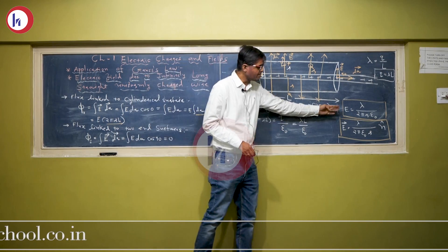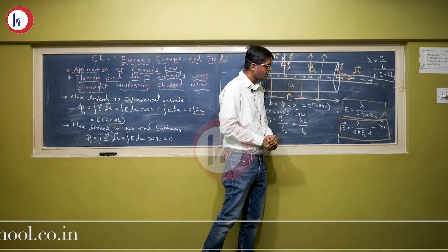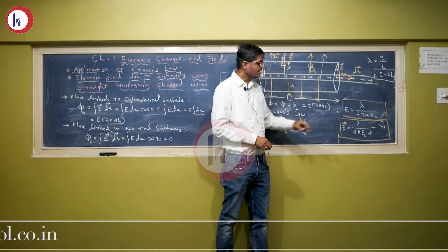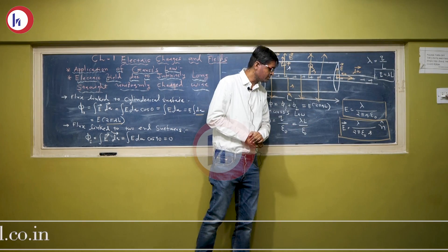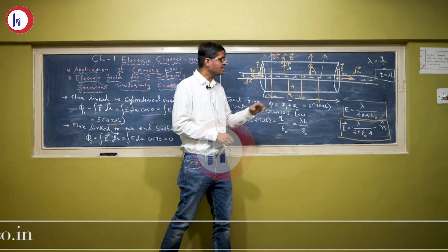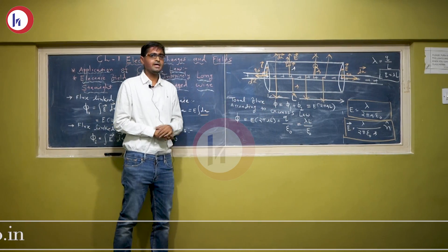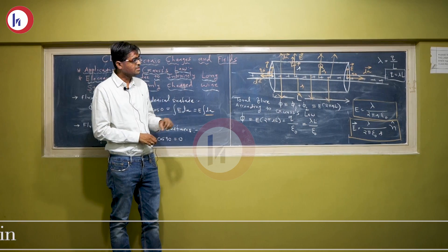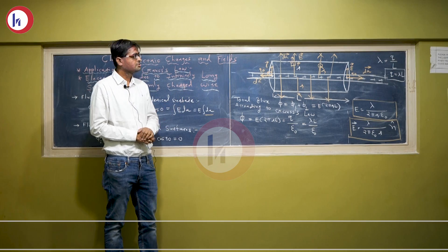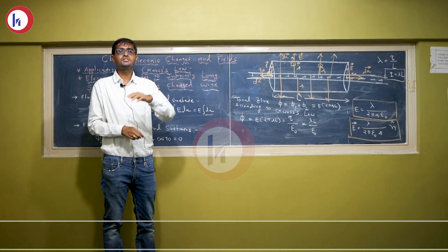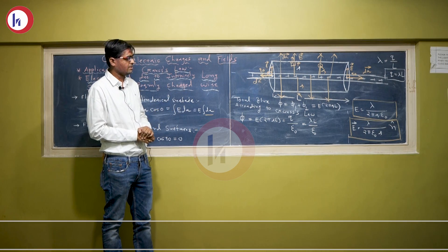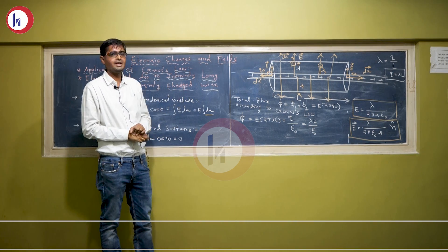The electric field is given by E = λ / (2πε₀r). In vector form, the electric field vector is E⃗ = λ / (2πε₀r) × n̂, where n̂ is the unit vector in the direction of the electric field. This is the electric field produced by an infinitely long, straight, uniformly charged wire — the formula we always use to find the electric field in such cases.